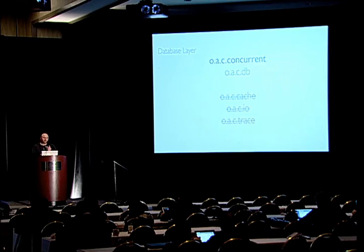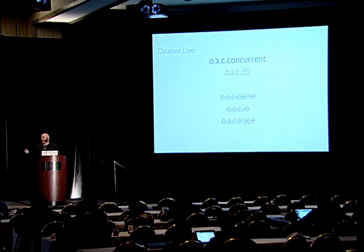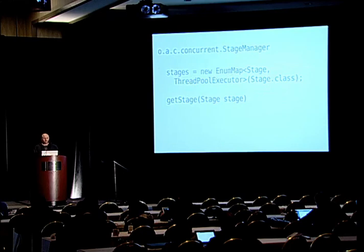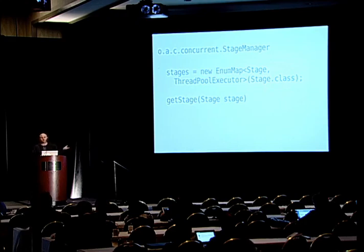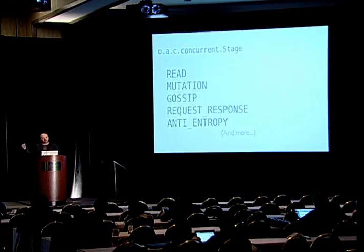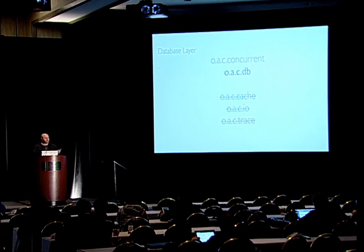The stages are managed in the concurrent package in a simple StageManager class. In its static initialization it creates a map of stages to thread pools, reads configuration — for example, concurrent_writes: 32 creates the mutation thread pool with 32 threads. It provides a simple function to get a thread pool, used by the messaging service. These stages are what you see in nodetool tpstats: Read, Mutation, Gossip, and so on.